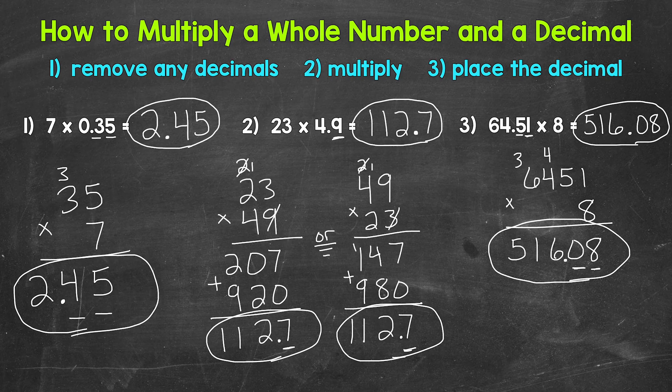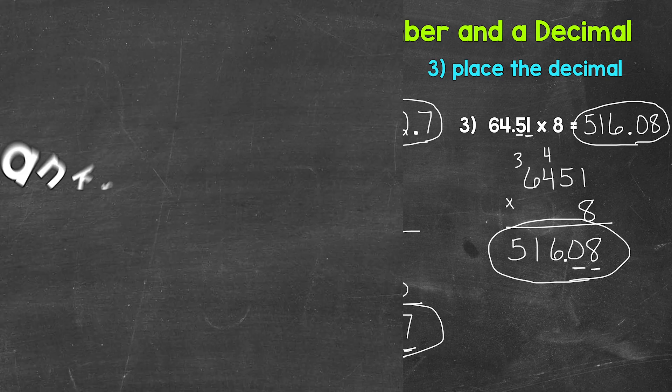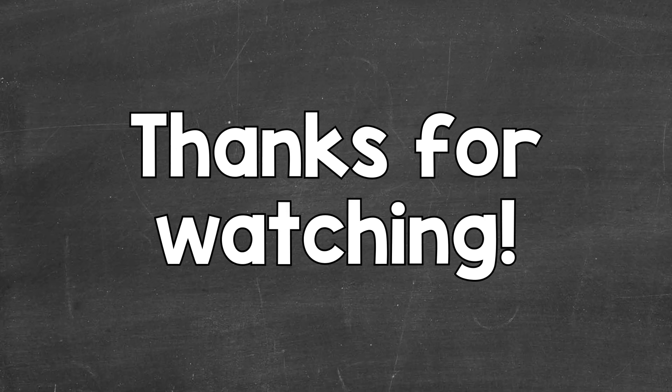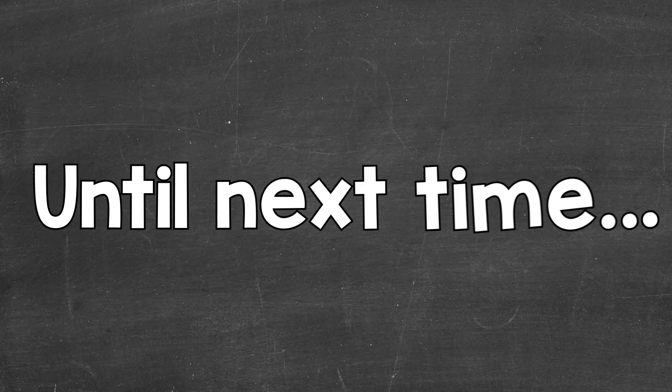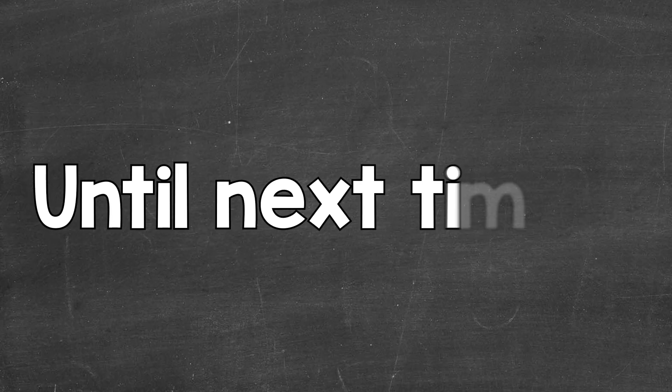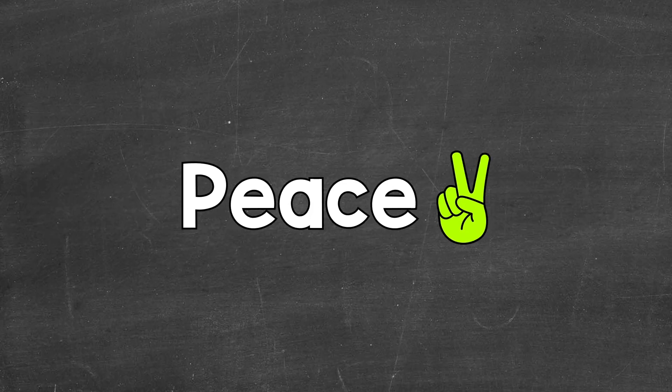So there you have it — that's how to multiply a whole number and a decimal. I hope that helped. Thanks so much for watching. Until next time, peace.